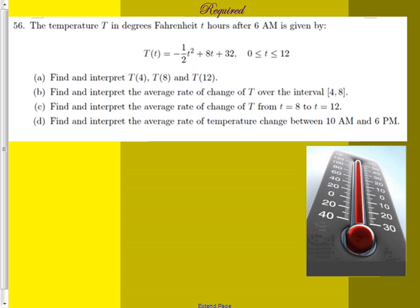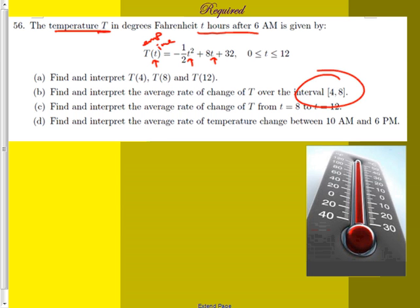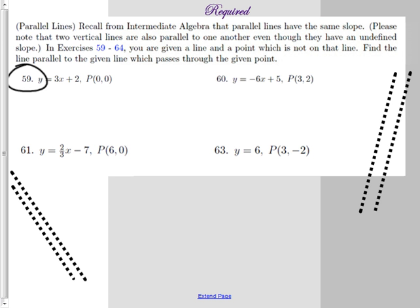You are required to do 44, 45, 46, and 49 — they're all very similar. Number 56 looks scary but it's actually pretty easy. Big T is temperature, little t is time — t hours after 6 a.m. When they give you T of 4, they're giving you a time and asking for the temperature; stick the time in and use a graphing calculator or grind it out by hand. The interval gives you two points — four comma something and eight comma something — which you already figured out.